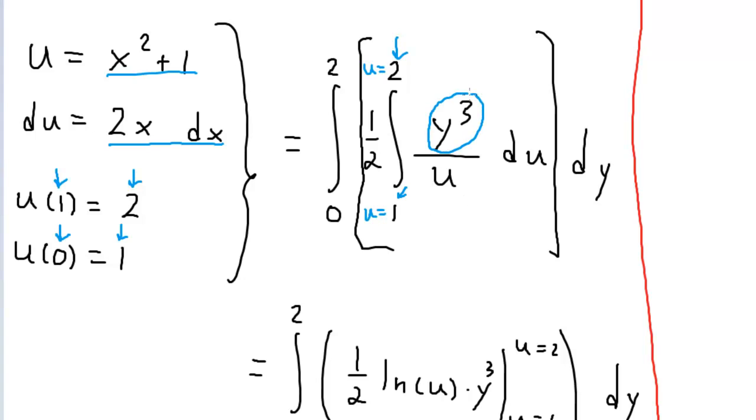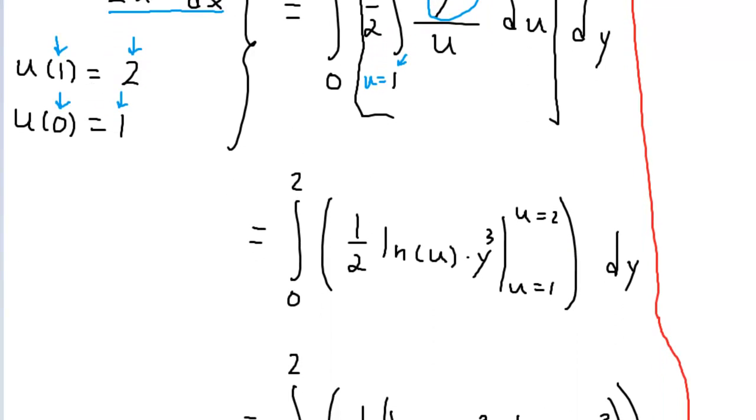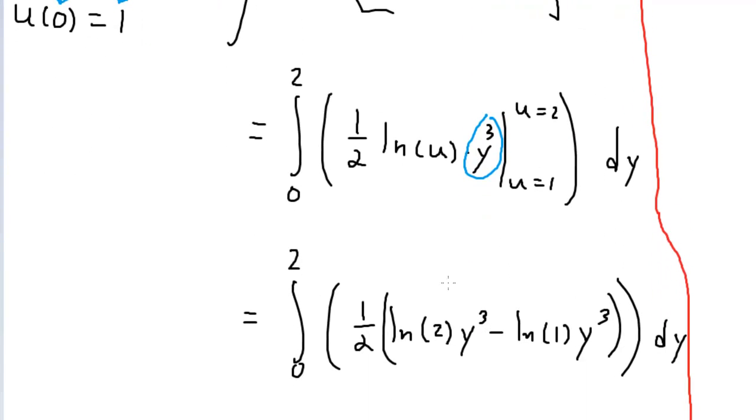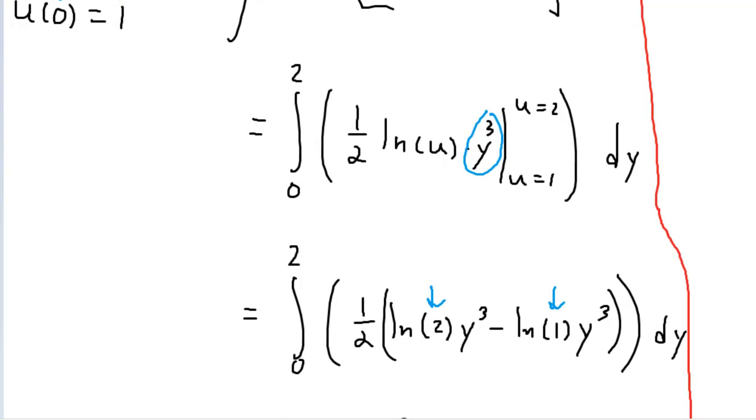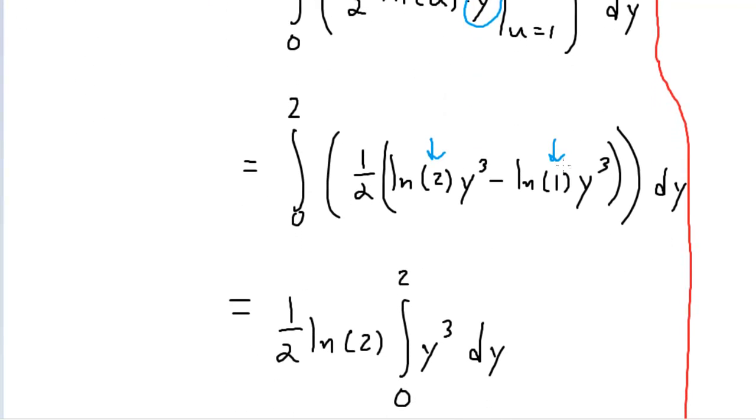Now, remember, y is treated as a constant here because we're integrating with respect to u. So this is really just 1 over u du. Pretty easy to compute. That is just natural log u times y cubed. From u equals 2 to u equals 1. And then we just go through and, again, treating y as a constant. We fill in the blanks. ln of 2, ln of 1. Now, natural log of 1 is 0. So this whole term goes to 0. And we have 1 half natural log of 2, which is just a constant. So we've moved it out here. And the remaining integral is with respect to y, from y equals 0 to y equals 2, of y cubed dy.